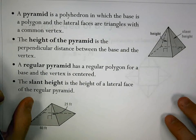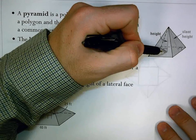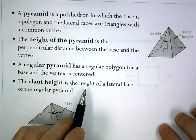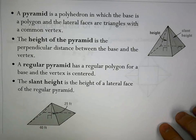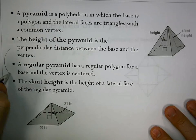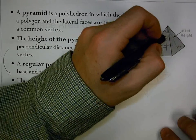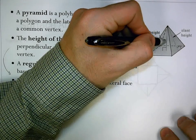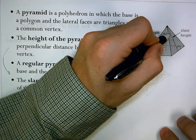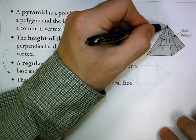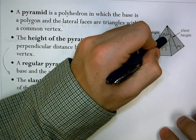The height of the pyramid is the perpendicular distance between the base and the vertex — that's how tall the pyramid is. A regular pyramid has a regular polygon for a base and the vertex is centered. We also need to be aware of the slant height, which is the height of the lateral face of the regular pyramid — it's the height of the triangle on the outside.